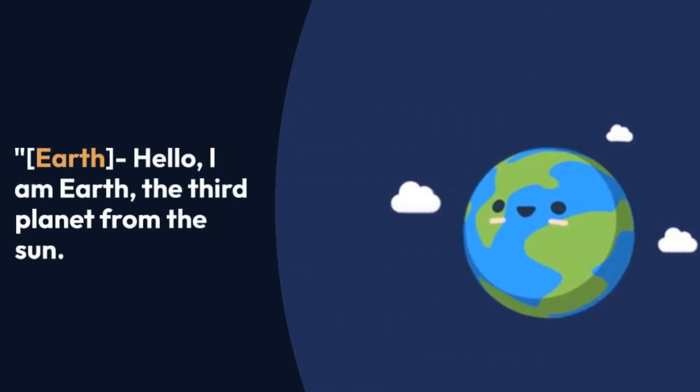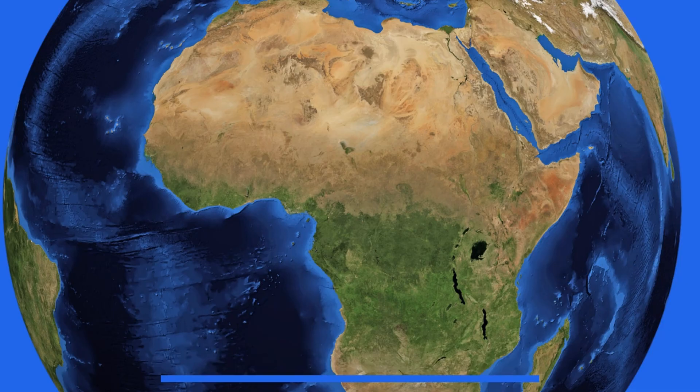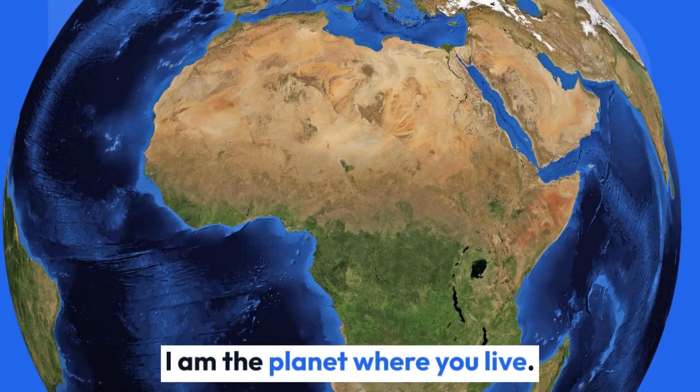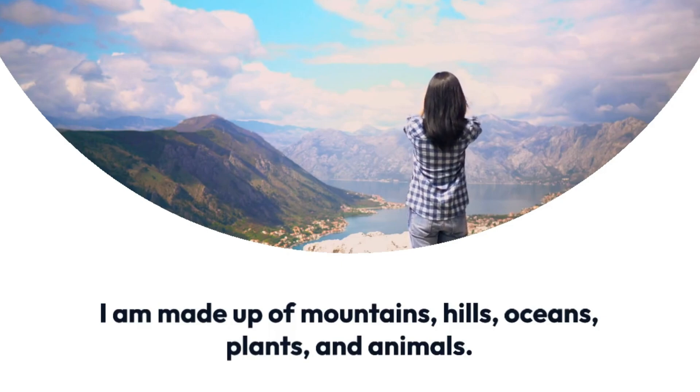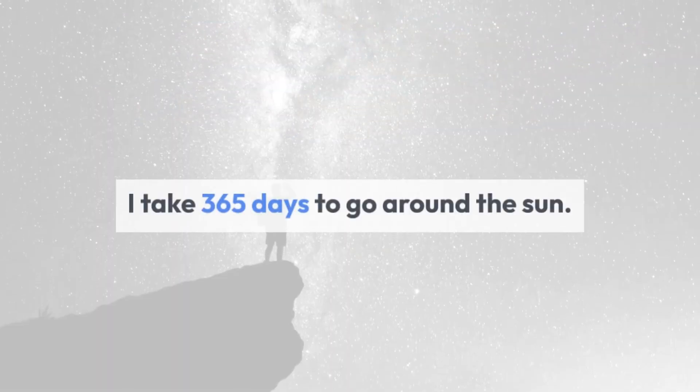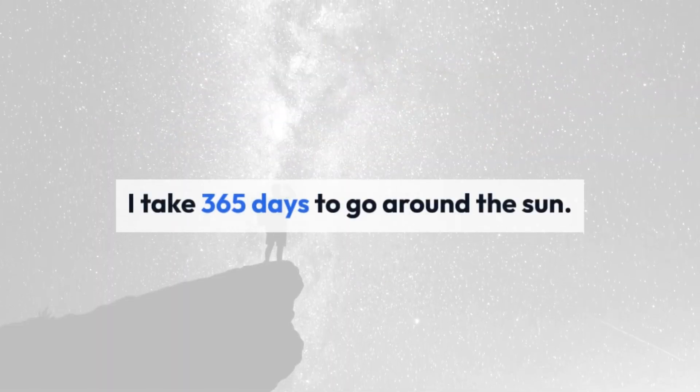Hello, I am Earth, third planet from Sun. I am the planet where you live. I am made up of mountains, hills, oceans, plants, and animals. I take 365 days to go around the Sun.